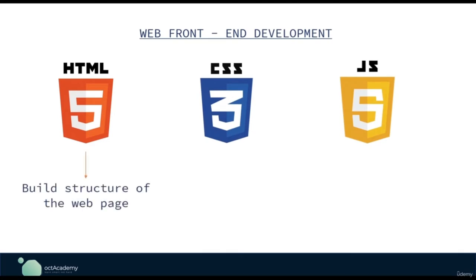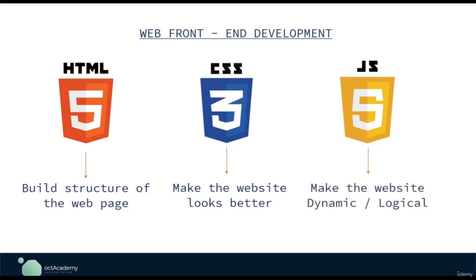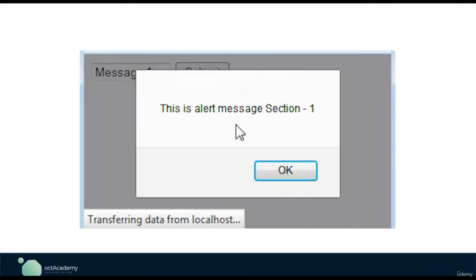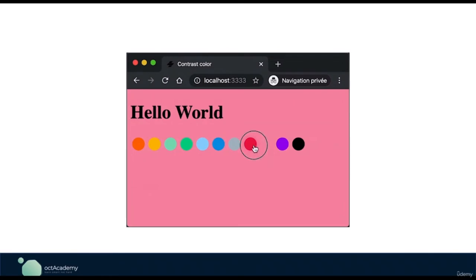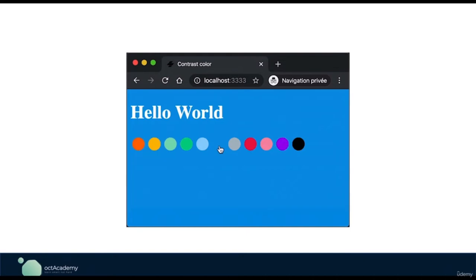We use HTML to build the structure of the web page. We use CSS to make the website look better by adding colors, fonts, layouts, etc. With JavaScript, we can make the website more logical and dynamic — for example, if someone clicks a button, show an alert or change a color. We can also manipulate the DOM using JavaScript.